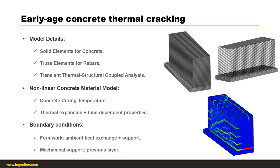In this block, we will have the ambient heat exchange that could be through the formwork on the sides of this model, and on top is the ambient heat through air, so there are different film coefficients. The mechanical support is the base layer on the bottom, which is old concrete with a higher stiffness, and there are fixed mechanical boundary conditions.